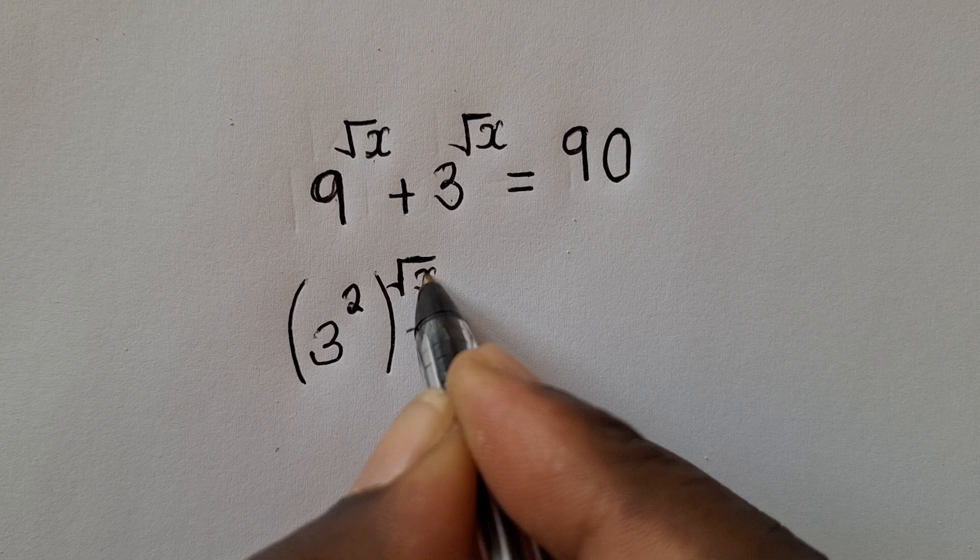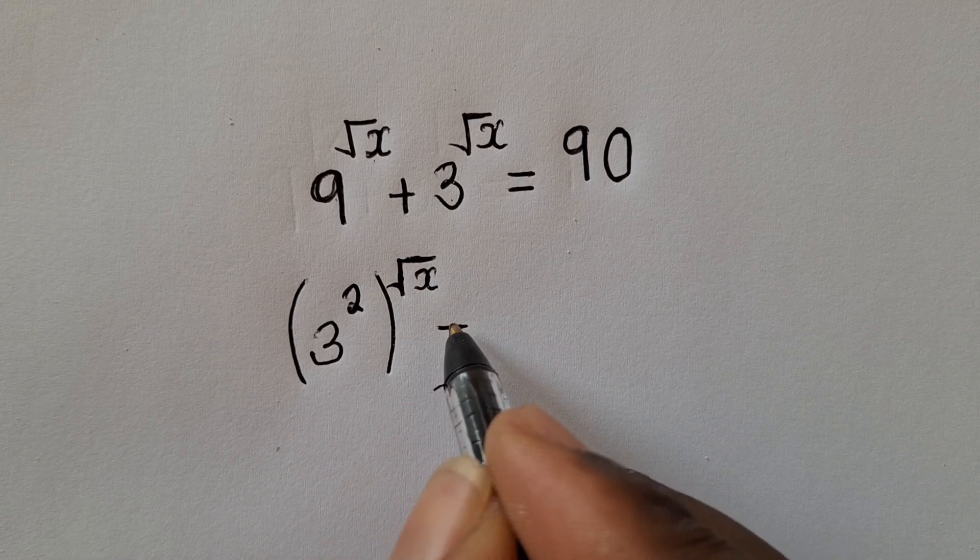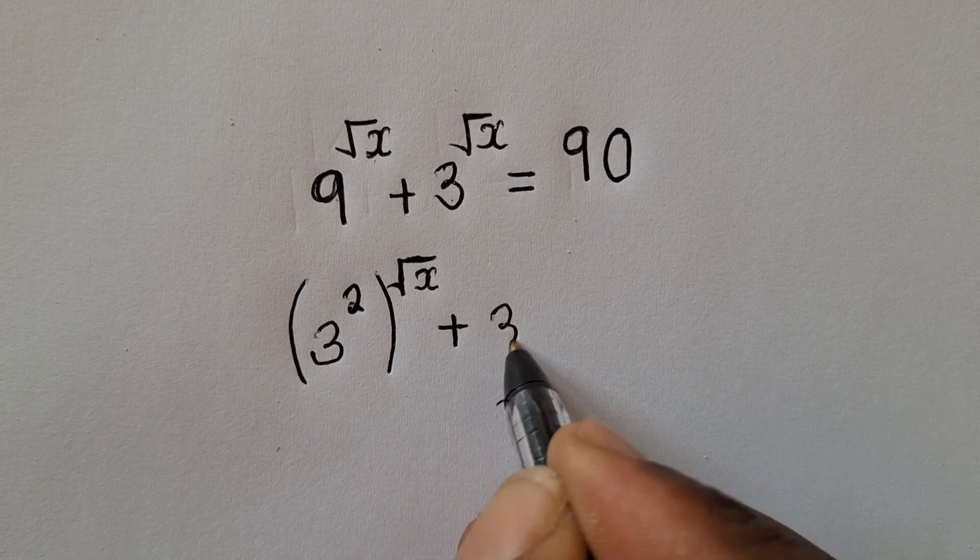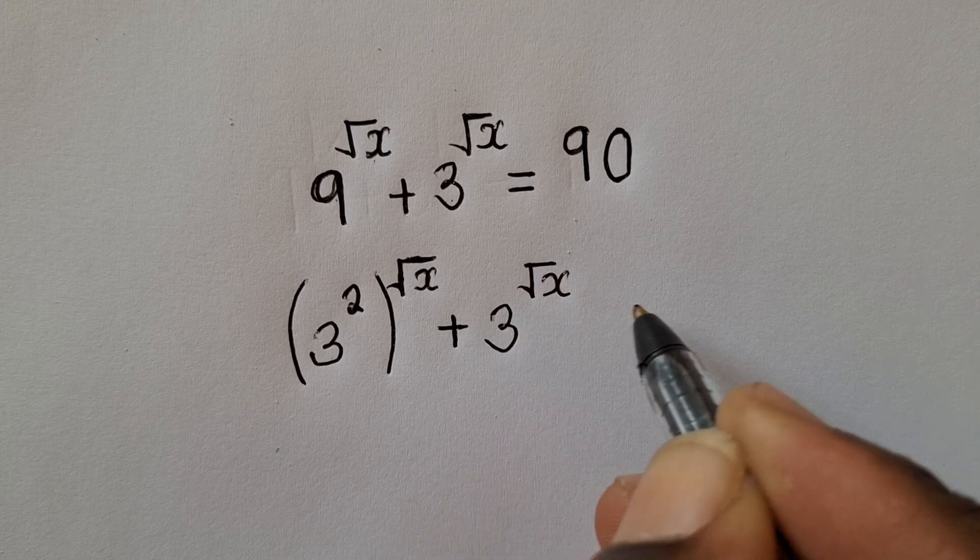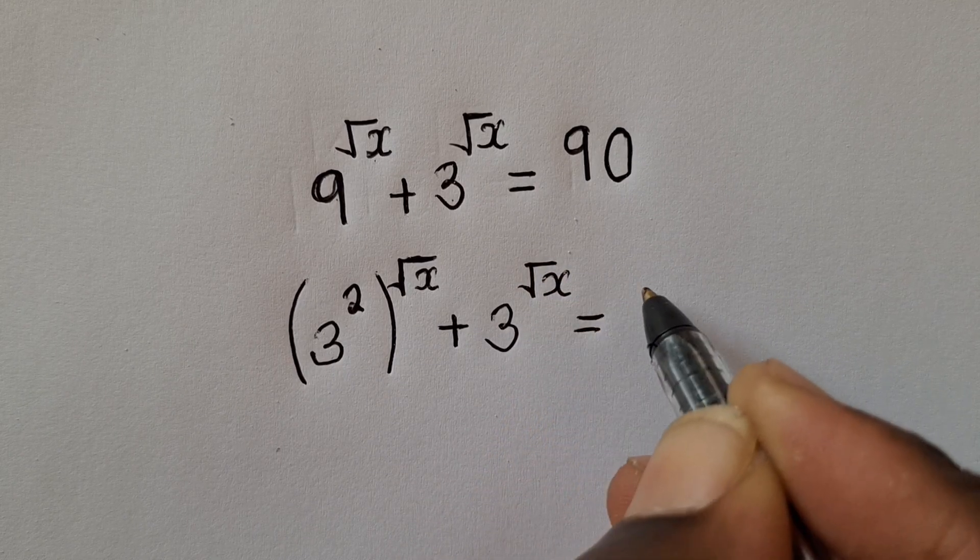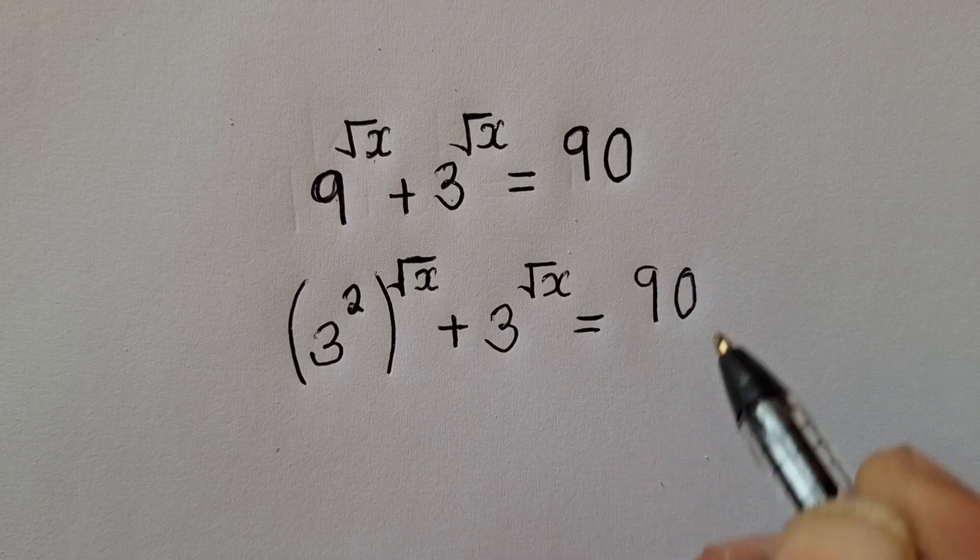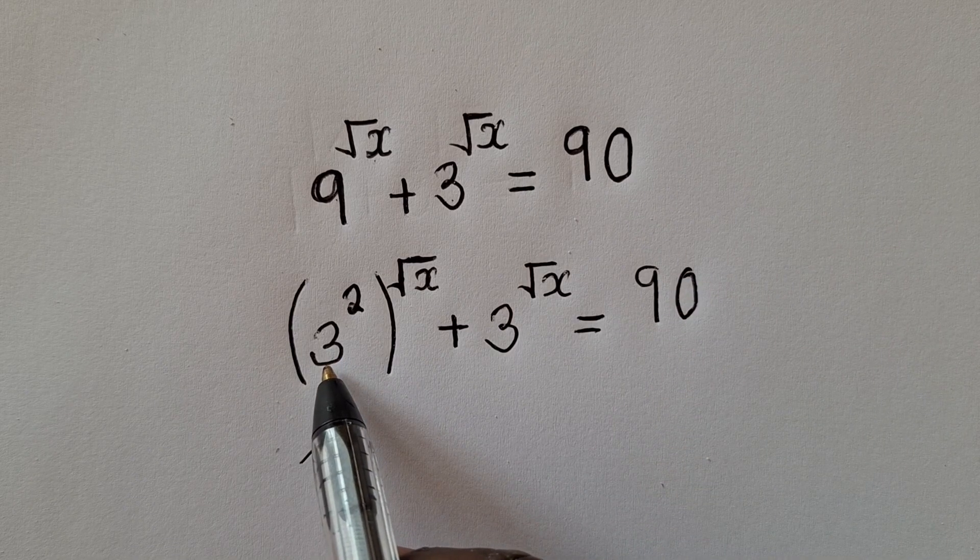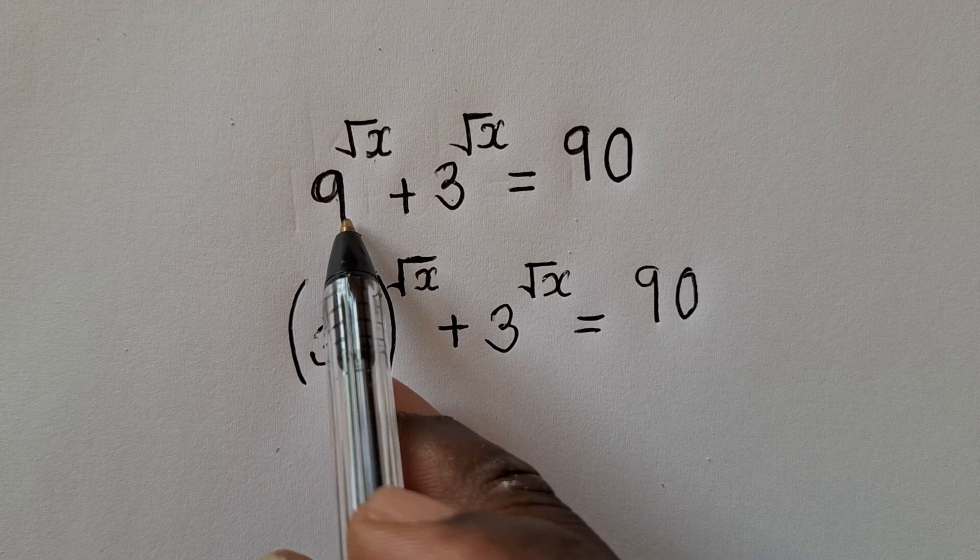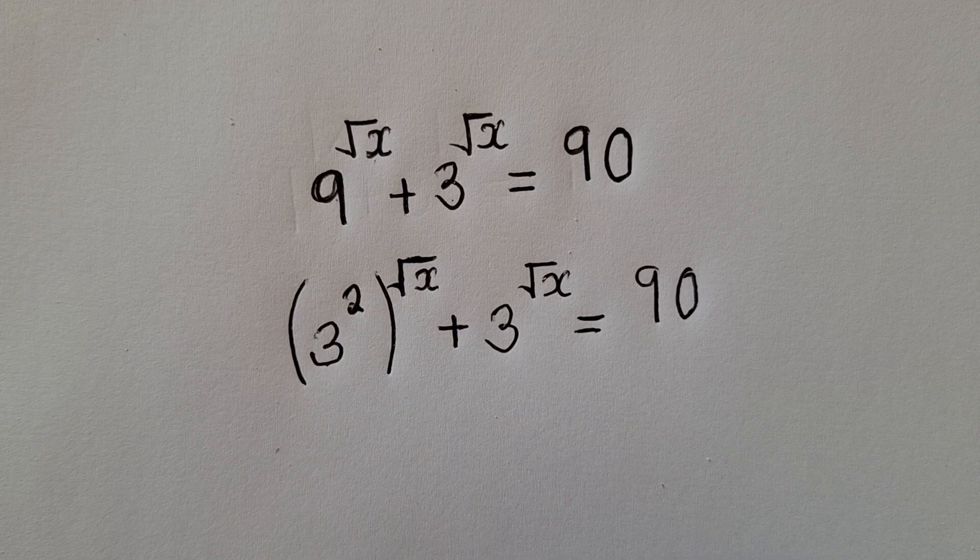Okay, so it's square root of x plus 3 power square root of x is equal to 90. I hope you've seen what I've done here. I've just written this 9 as 3 power 2.